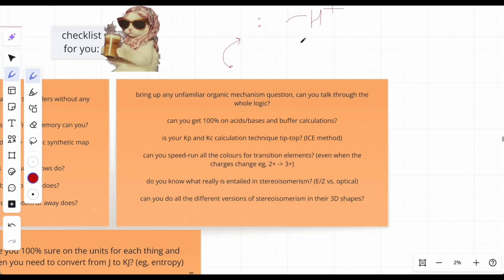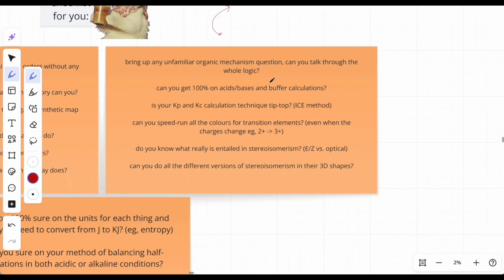Can you get 100% on acid bases and buffer calculations? If you sort this out, you'll be flying through. If you don't know how, there's tons of videos online. Malek Andguy - I will back this guy to the day I die, without him I don't know what I would have done. Make sure you're 100% on them, and sort out redox titrations too, and Kc, Kp, and rate equations - all calculations. Is your Kp and Kc calculation technique tip top? I did the ICE method. Make sure you do them properly.